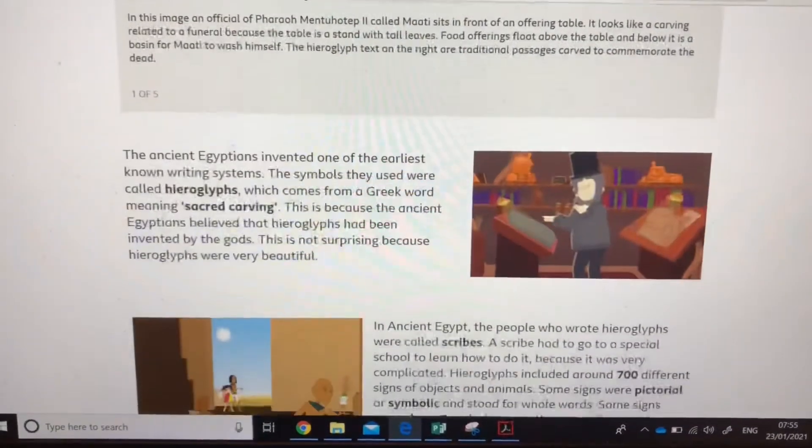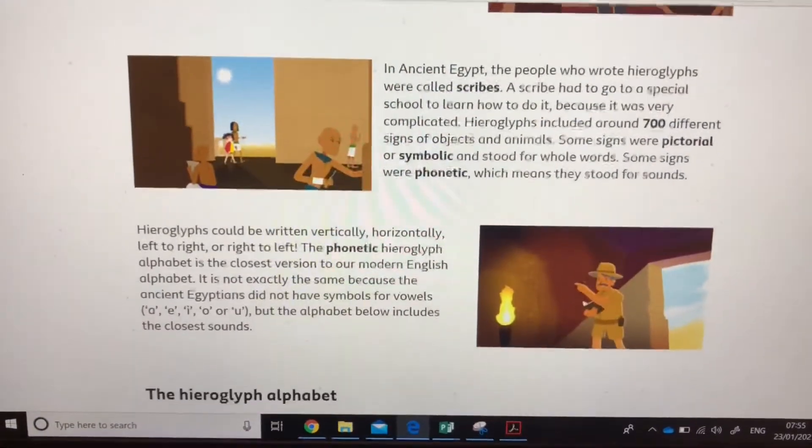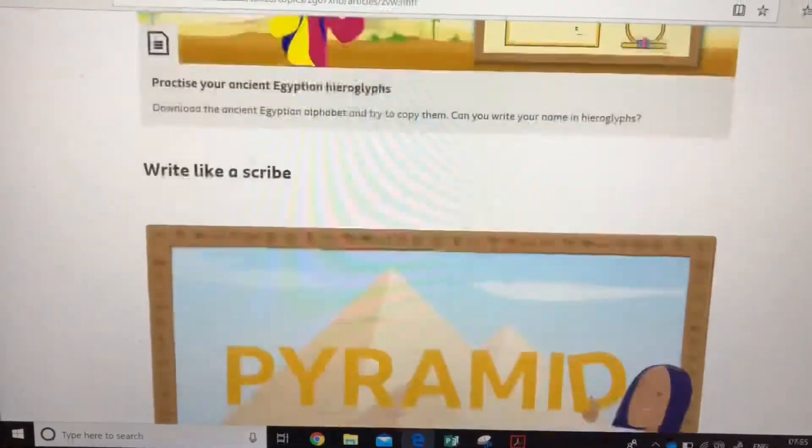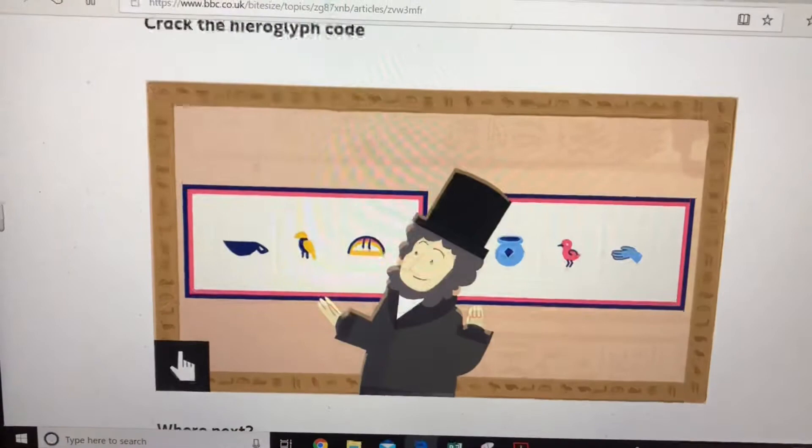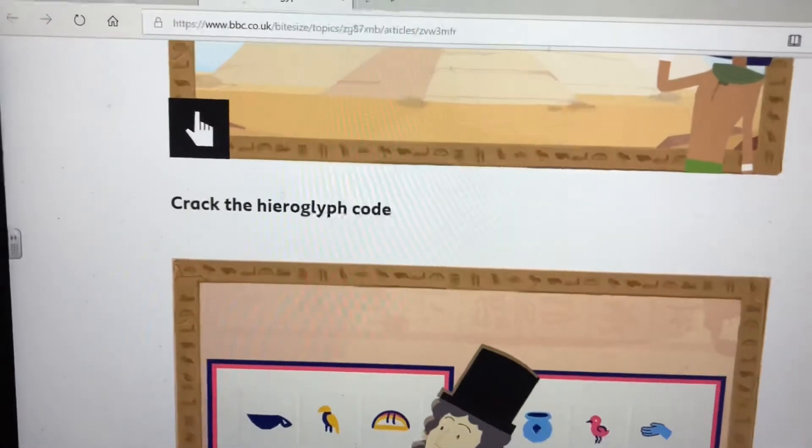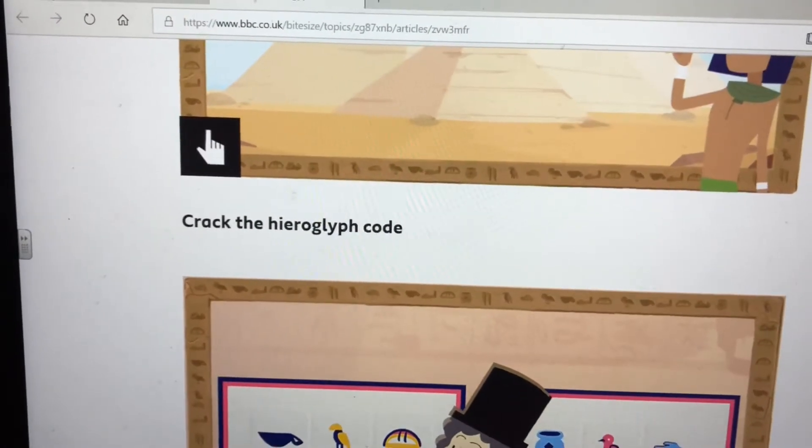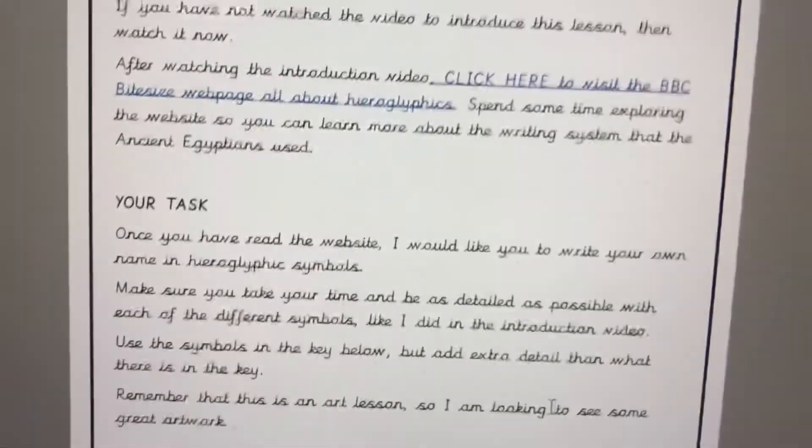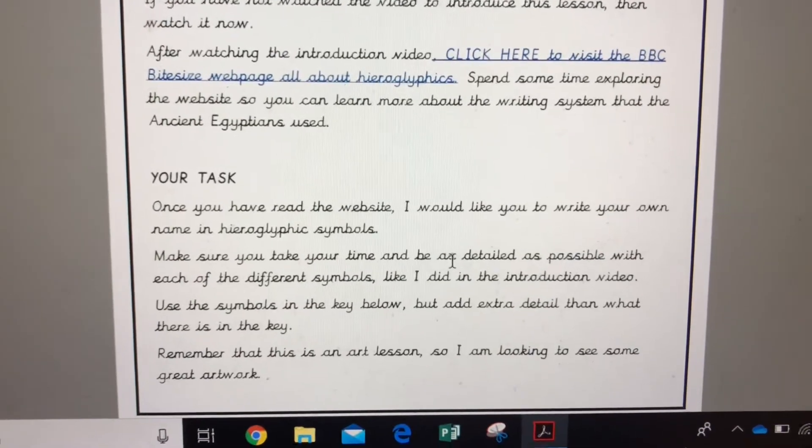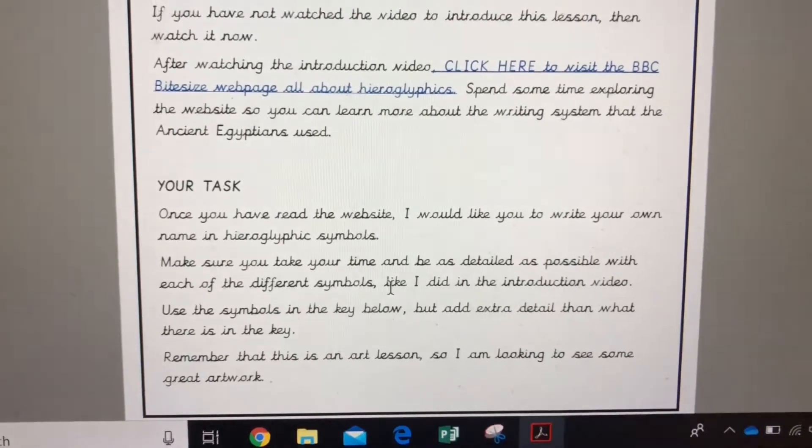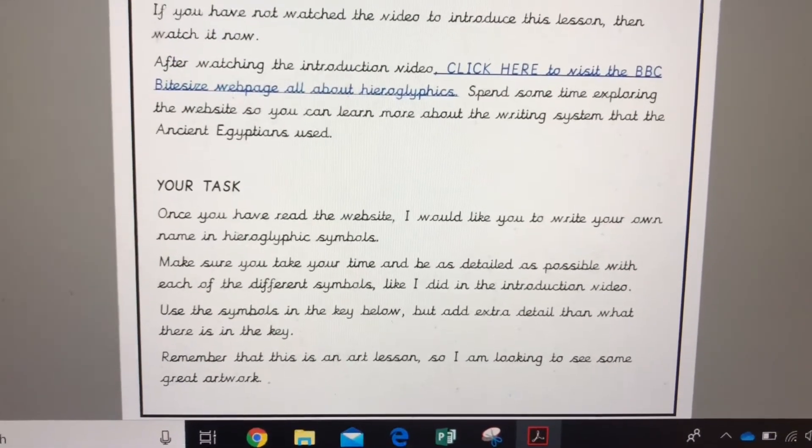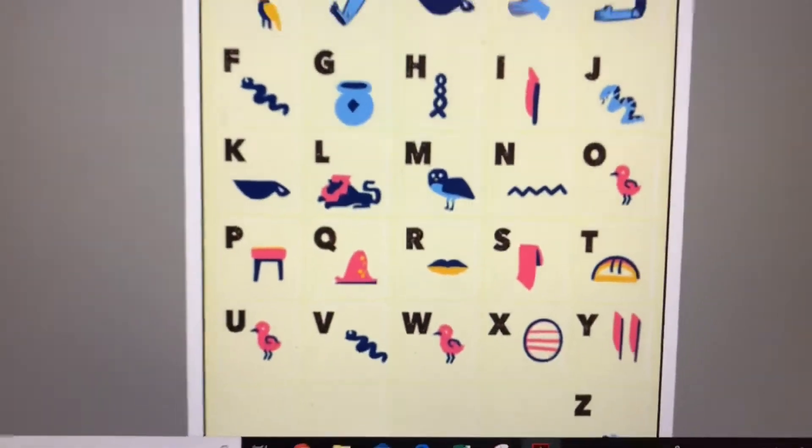So what you are going to be doing is go through this and then you can read some information about hieroglyphics. You can read about what they were, who made them, how we know about them. We've got the alphabet here, we've got a little place to practice your hieroglyphics. So I want you to spend five or ten minutes on this website. Then we go back to what your task is for today, and it says once you've visited the website I would like you to write your own name in hieroglyphic symbols.